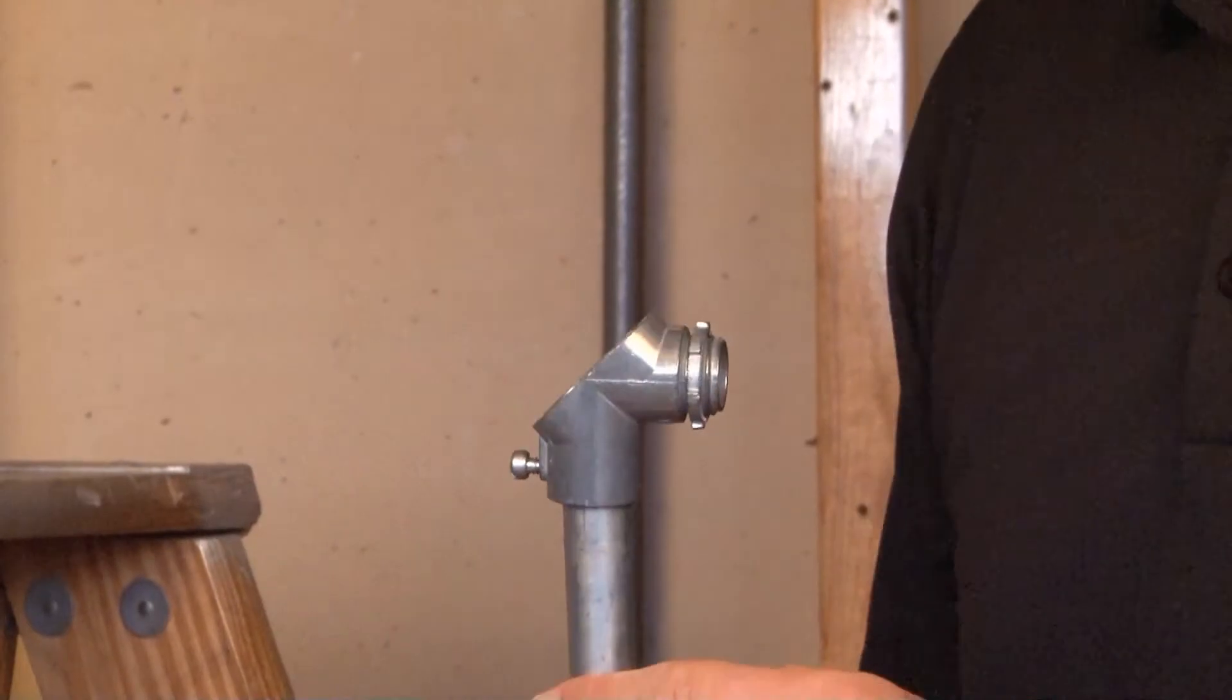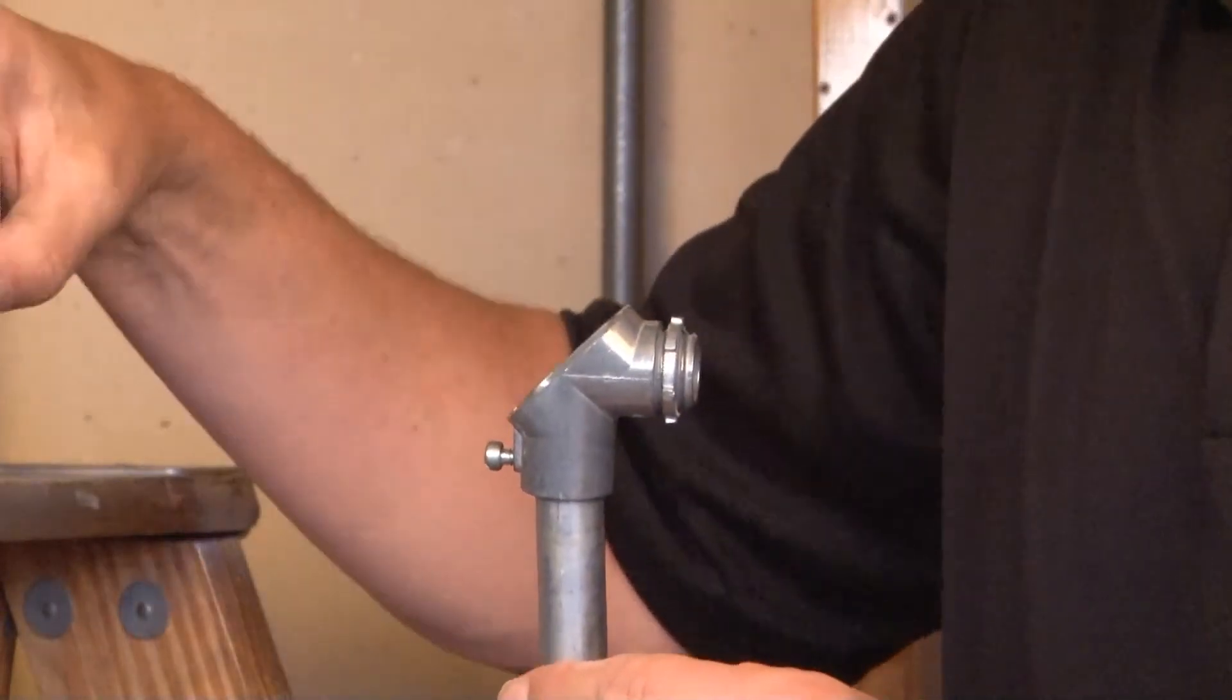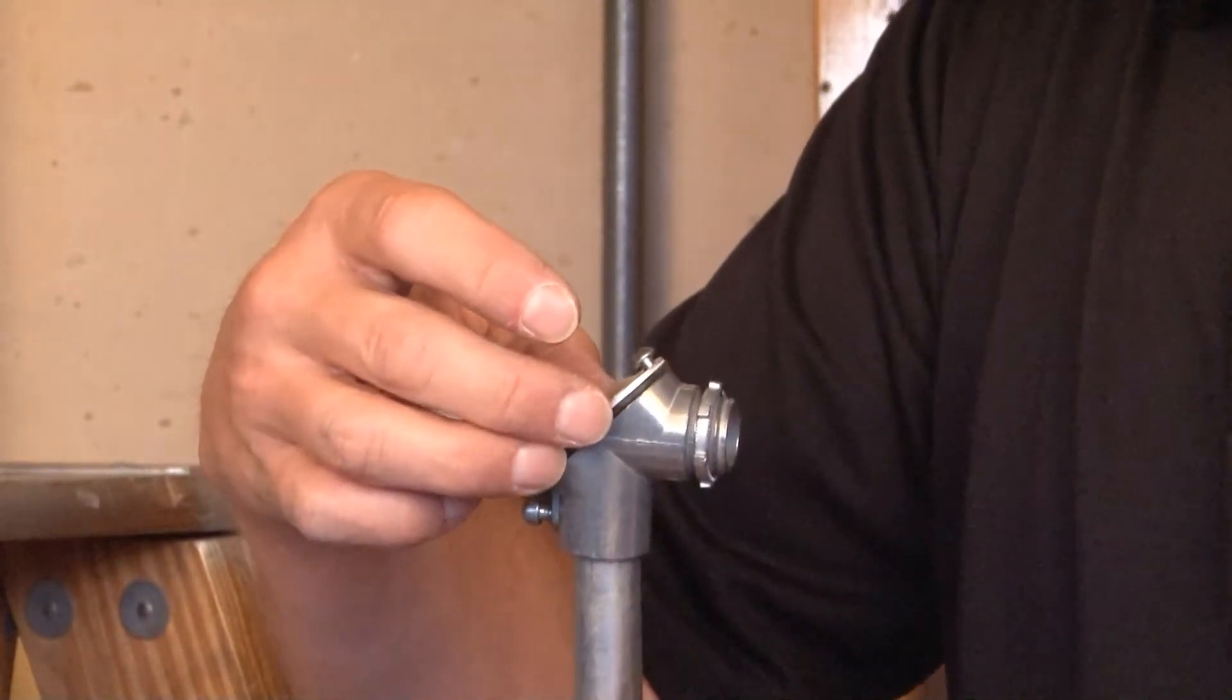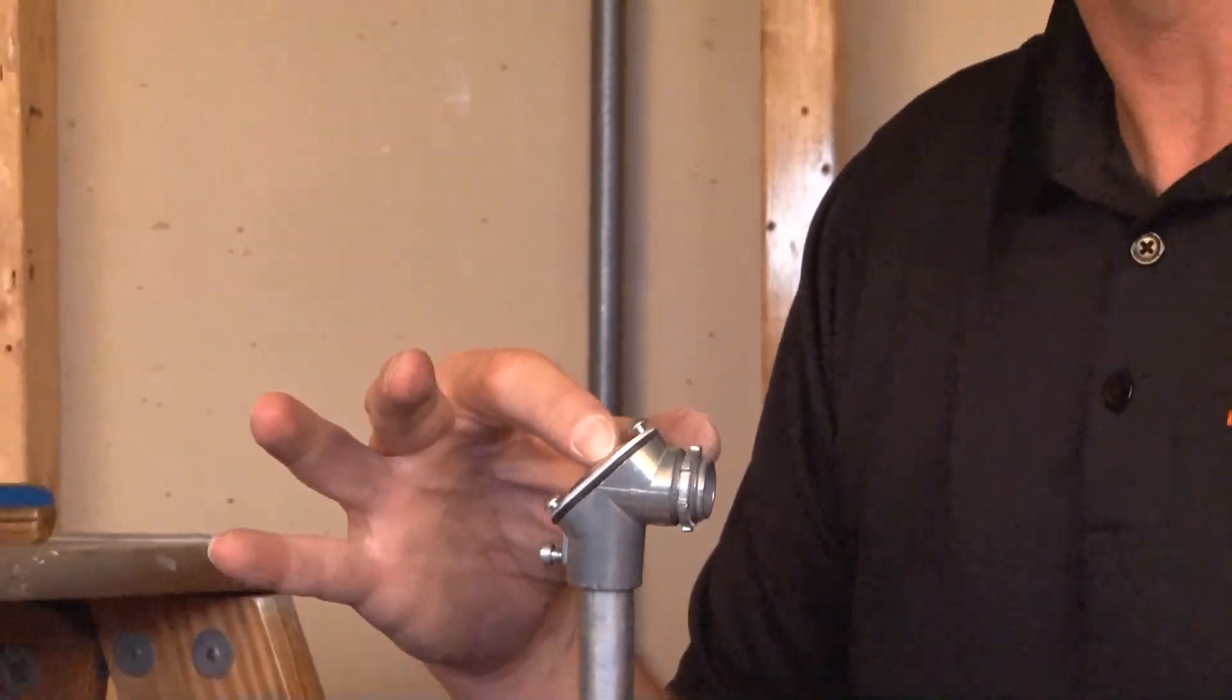Once the wires are completely through, you simply tighten the cover back on and you've completed the enclosed installation.